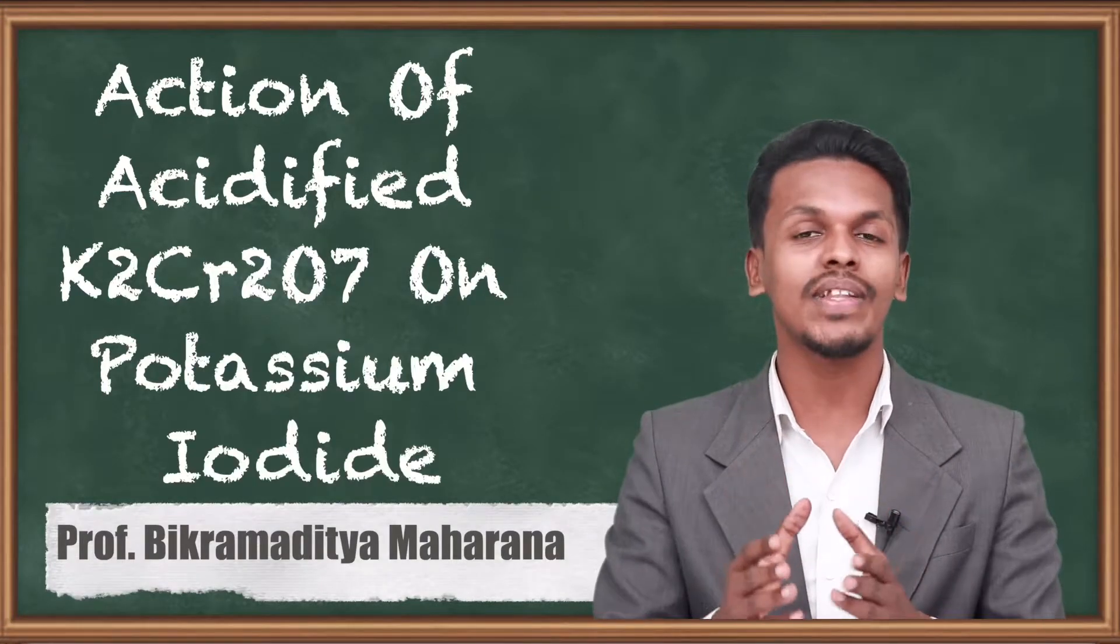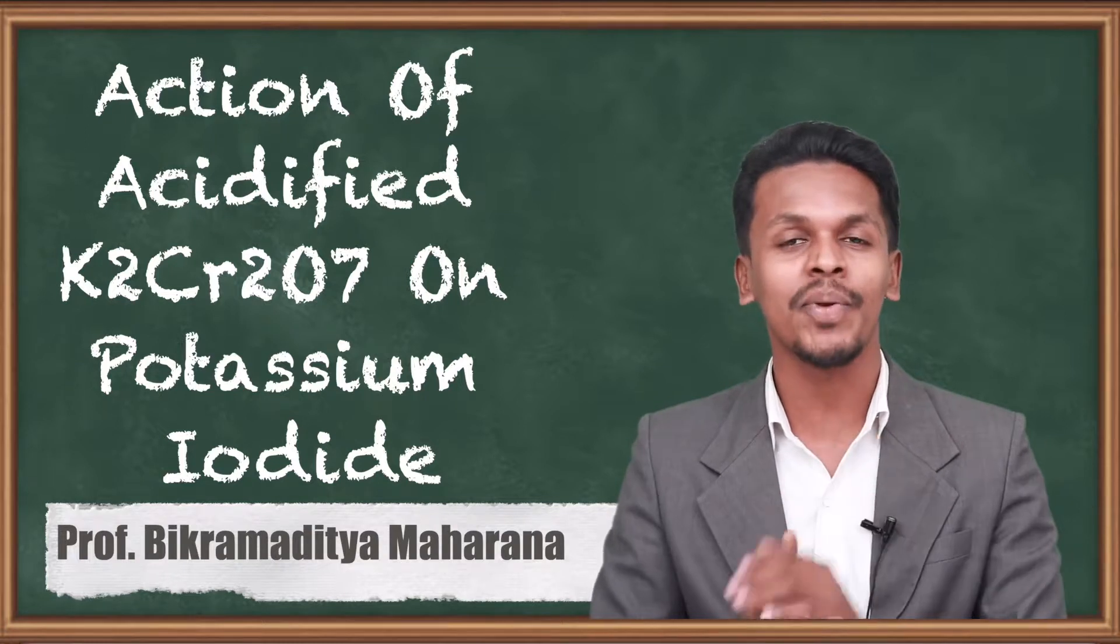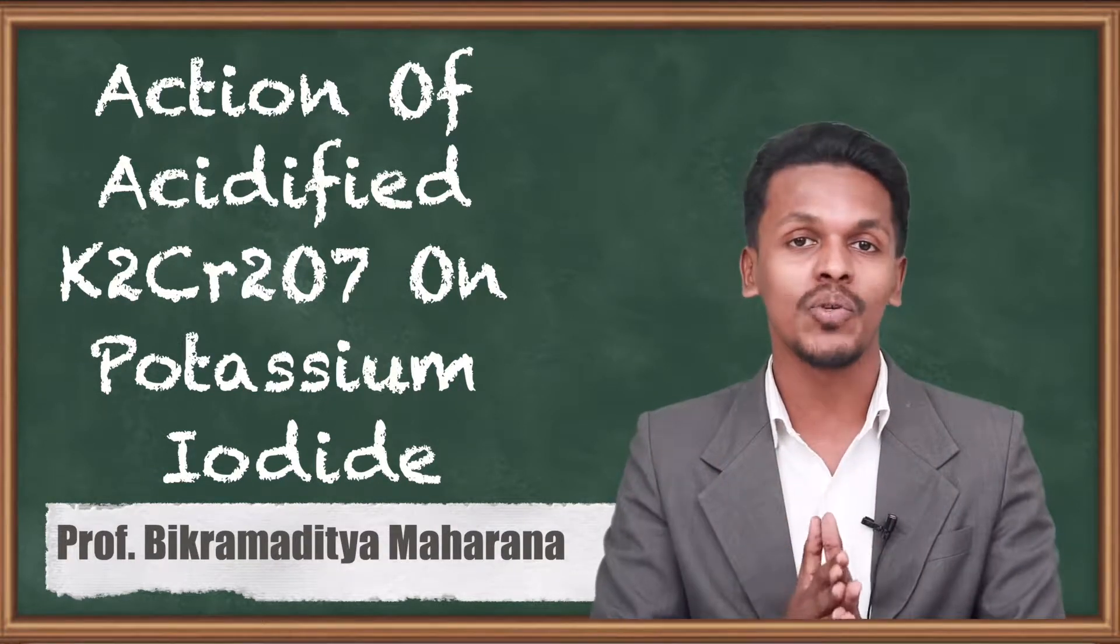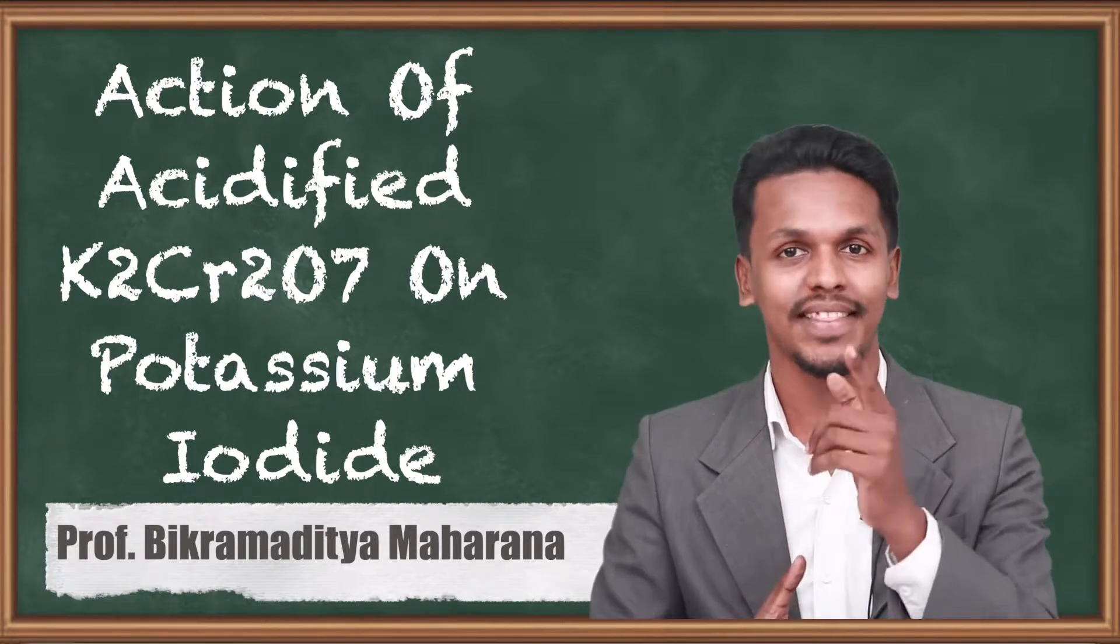In the previous topic, we discussed the action of acidified K2Cr2O7 on ferrosulphate. Now in this topic, we are going to talk about the action of acidified K2Cr2O7 on potassium iodide. So what is the reaction? This is what I am going to discuss in this topic.